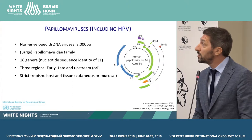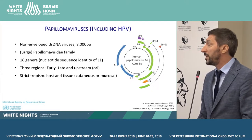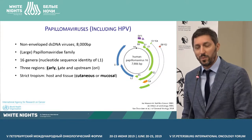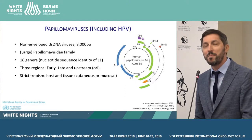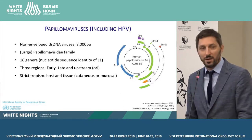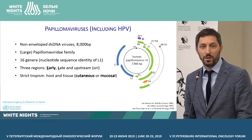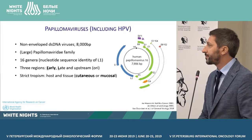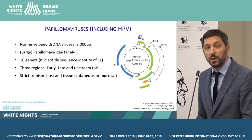HPV is a double-stranded DNA virus with 8,000 base pairs, and it belongs to a large family — the Papillomaviridae family, papillomaviruses on the whole. The family consists of 16 genera, and the genus specificity is based on the identity of L1, which codes the capsid protein. In this virus, there are three regions.